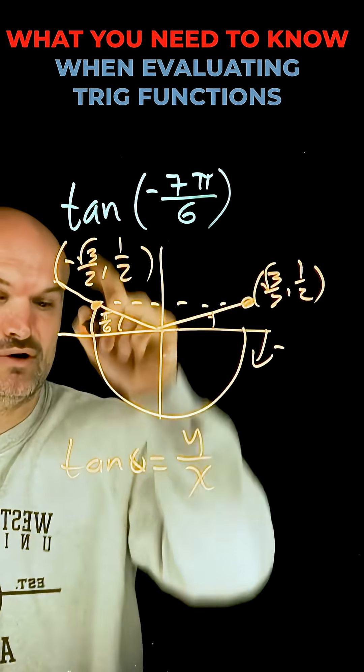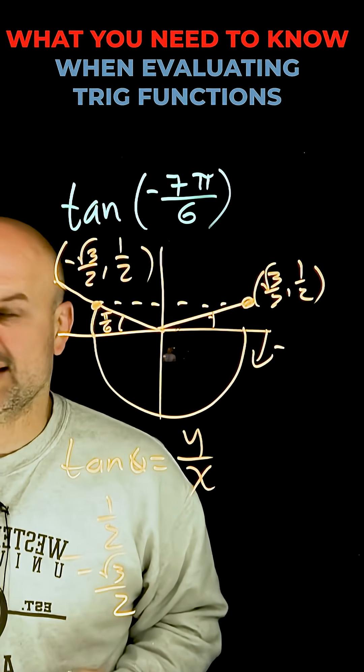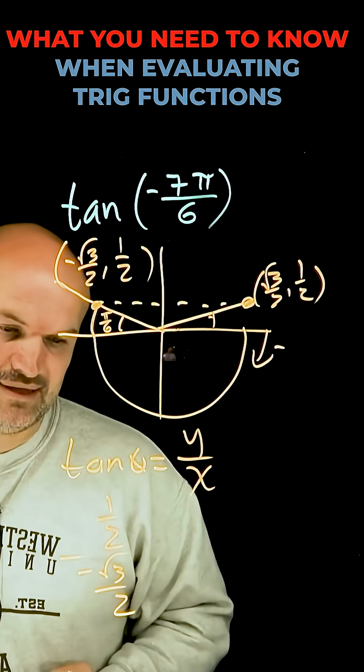So in this case my y-coordinate is going to be 1 half, my x-coordinate is a negative square root of 3 over 2, and now all I simply need to do is simplify them.